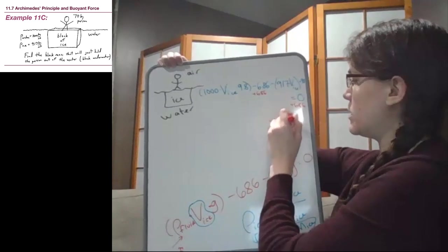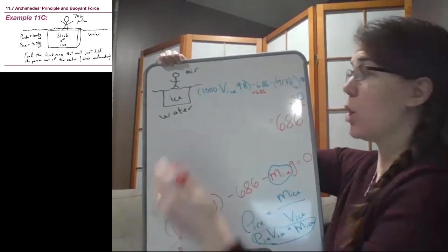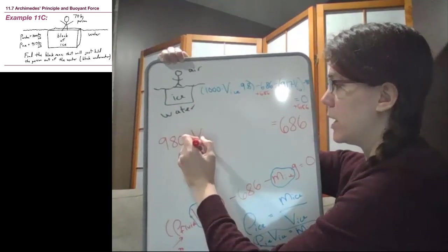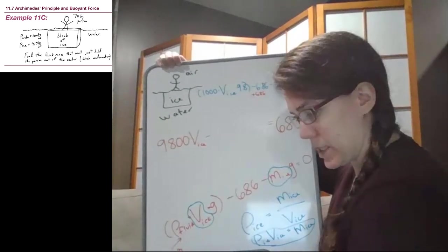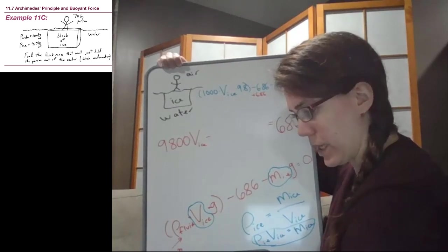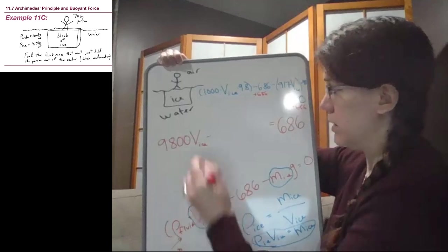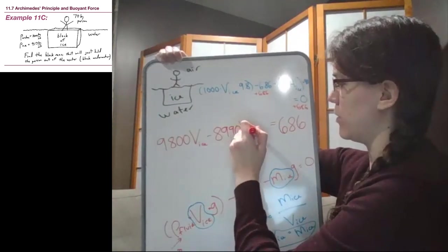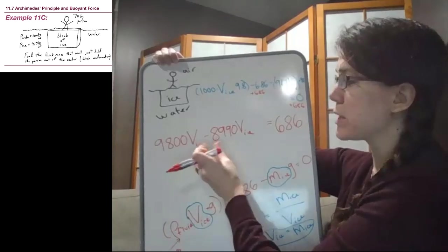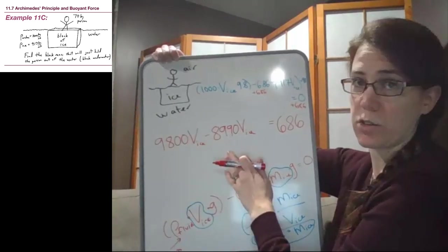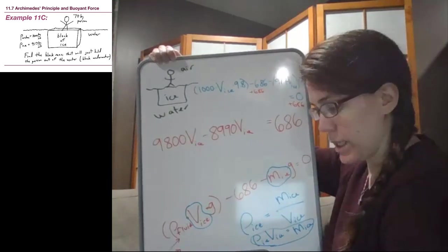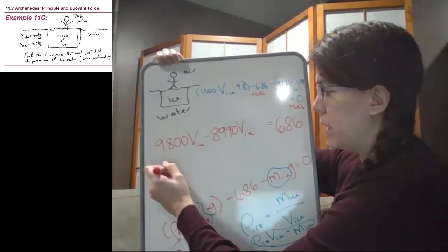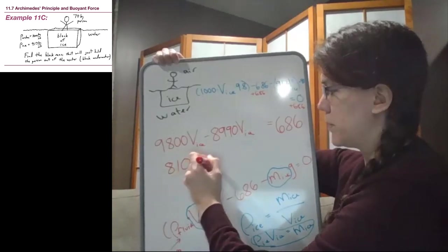So cleaning this up to give us some space to solve. We have 686 newtons on the right side. We have 9800 volume of the ice minus 917, 917 times 9.8 is 8990. We have 8990 V ice rounding, which means we can take those two terms and bring them together. It's kind of like having 5X minus 2X. We just combine those terms.